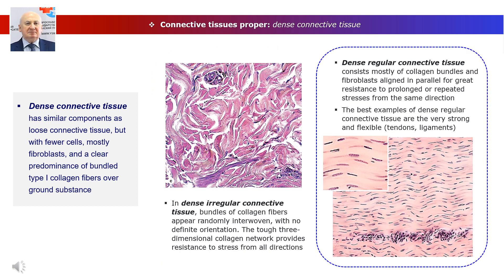Dense regular connective tissue consists mostly of type 1 collagen bundles and fibroblasts aligned in parallel, for great resistance to prolonged or repeated stresses from the same direction. The best examples are tendons, aponeuroses, and ligaments. Fibrocytes with elongated nuclei lie parallel to the collagen fibers, with cytoplasmic folds enveloping portions of the collagen bundle. All regular connective tissue structures are poorly vascularized and repair of damage is usually slow, with sources of regeneration derived from poorly differentiated cellular elements of loose connective tissue interlayers within tendons and ligaments, denoted as endotendin.